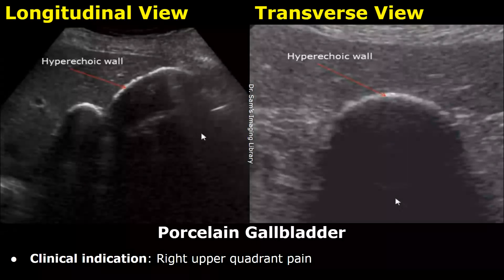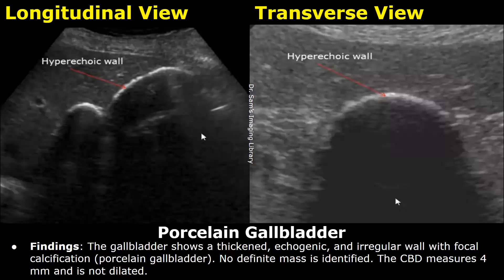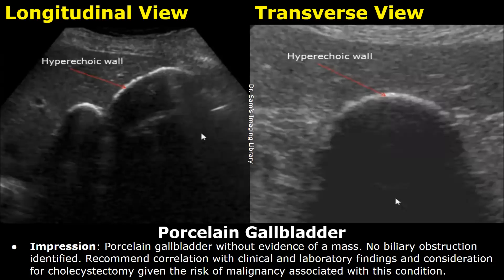This is a case of porcelain gallbladder. The indication was right upper quadrant pain. In the findings, you can write a thickened echogenic and irregular wall with focal calcification. In the impression, you can write porcelain gallbladder — with or without evidence of a mass — and recommend correlation with clinical and laboratory findings, and consideration for cholecystectomy given the risk of malignancy associated with this condition.